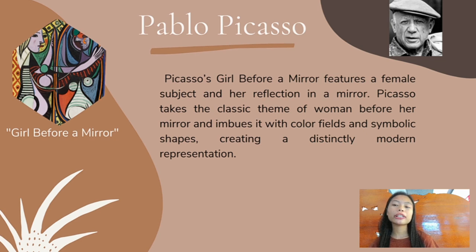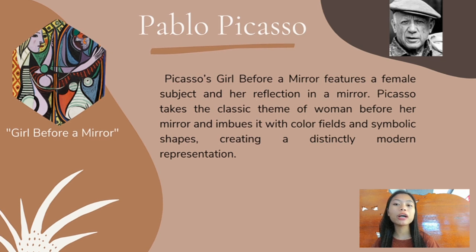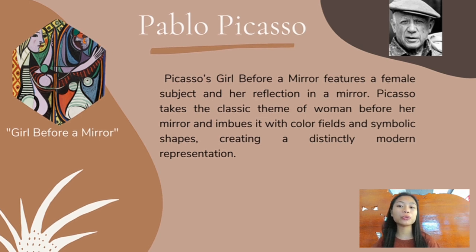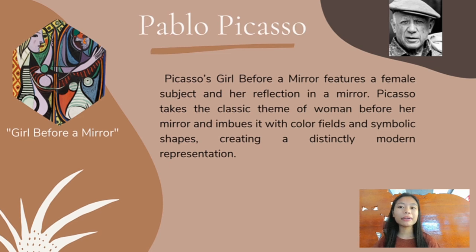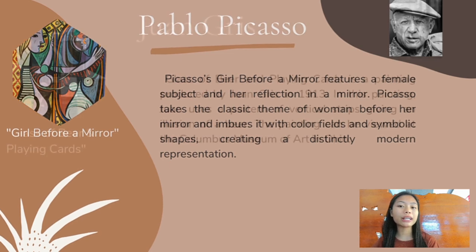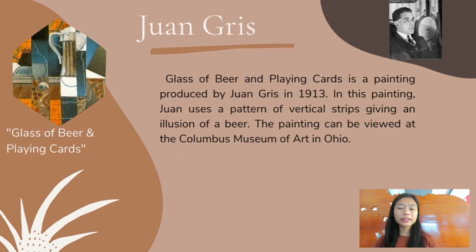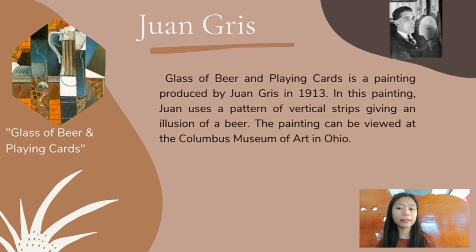The second artwork is 'Girl in the Mirror' by Pablo Picasso. The subject is Picasso's lover and muse Marie-Thérèse Walter. Various interpretations and themes have been used to describe the meanings of the work, such as dark versus light and nude versus old age, among others. The painting can now be found at the Museum of Modern Art in New York City. The third artwork, 'Glass of Beer and Playing Cards,' is one of the most popular paintings by Spanish Cubist artist Juan Gris. It is organized according to a dominating pattern of vertical strips and can be viewed at the Columbus Museum of Art in Ohio.